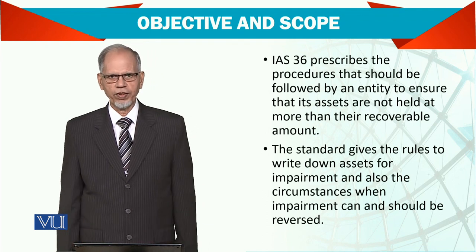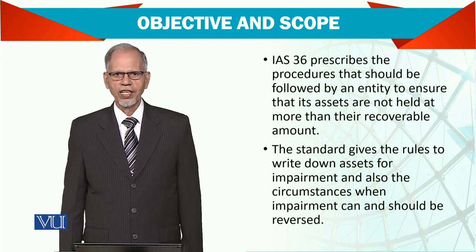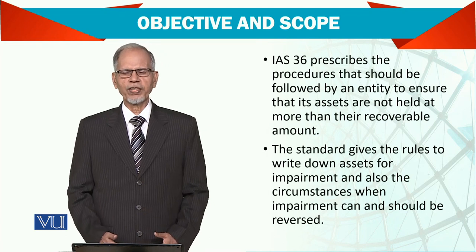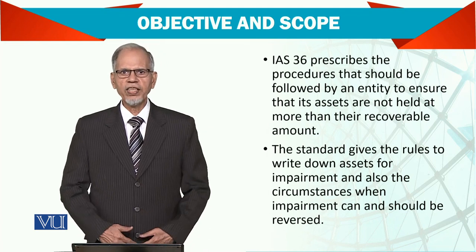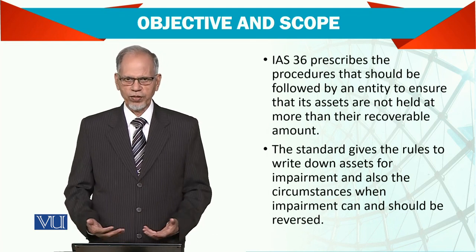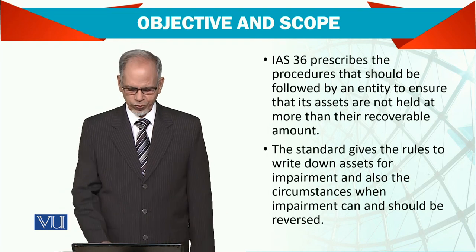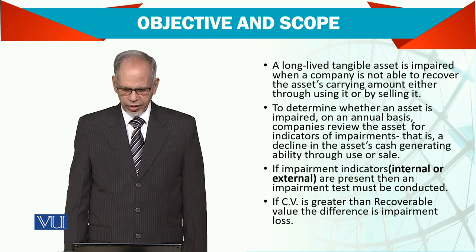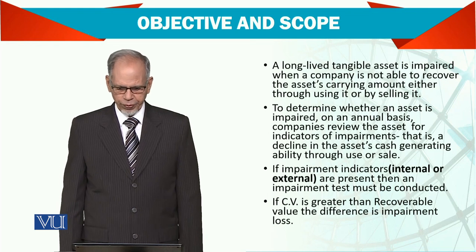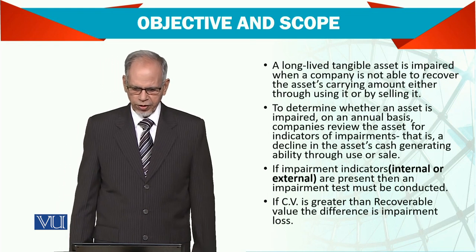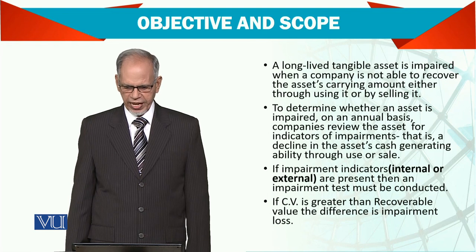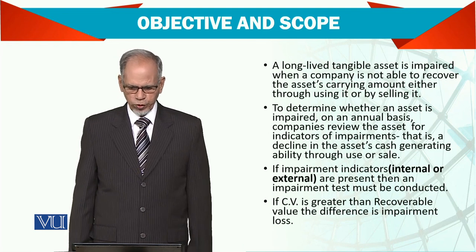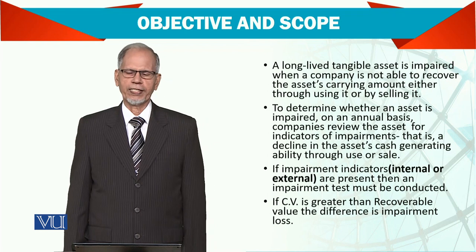Sometimes there is a reduction in the value of assets, and sometimes it happens that after the reduction, the value can increase — that is, the impairment can be reversed. A long-lived asset is impaired when a company is not able to recover the asset's carrying amount either through using it or by selling it.